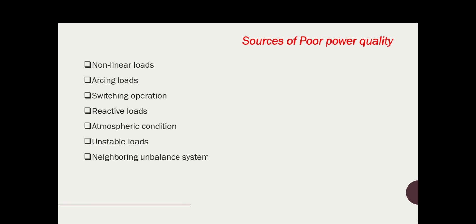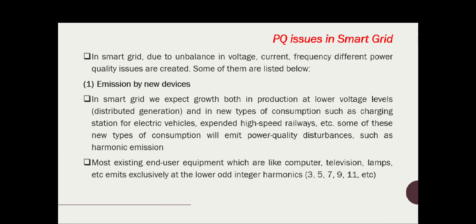The sources of power quality issues are the presence of non-linear loads, arcing loads, switching operations, reactive loads, atmospheric conditions, unstable loads, and neighboring unbalanced systems. Our interest now is to find out what are the power quality issues in a smart grid, or what is the additional effect of integrating a renewable energy system into a conventional grid.